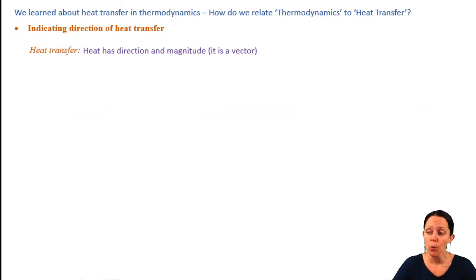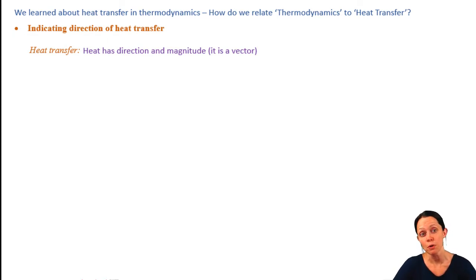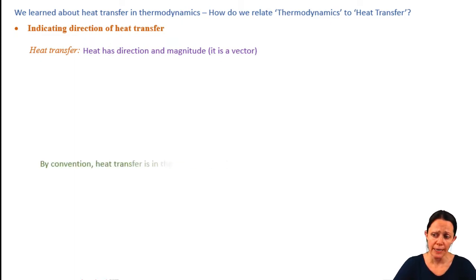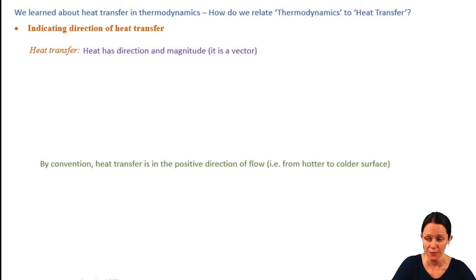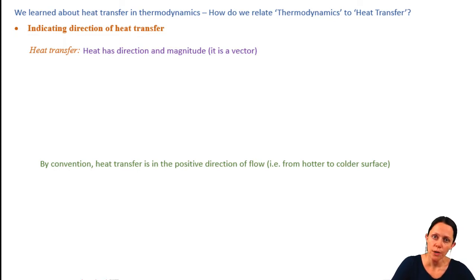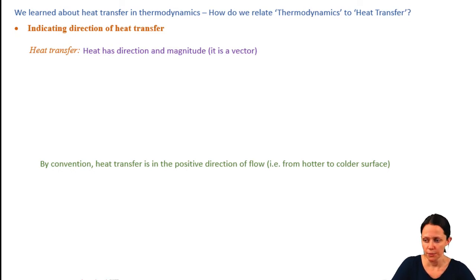But in heat transfer, we acknowledge that heat transfer is a vector — it has a direction and a magnitude. Therefore, we need to define a coordinate system. By convention, it's common to define heat transfer as being positive if it's going in the direction of flow, in other words from hotter to colder. So you want to pick your coordinate system so your q kind of makes sense.